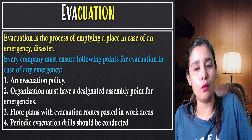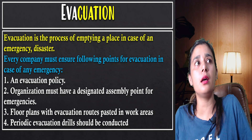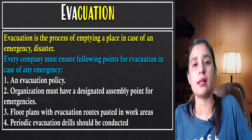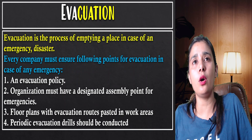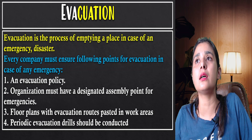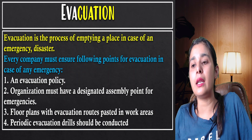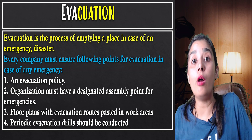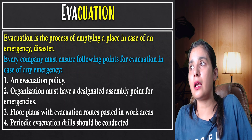An evacuation policy has to be followed by companies. Organizations must have designated assembly points for emergencies — employees need to know where to assemble if there is a disaster. Training must be given, especially in large organizations. Floor plans with evacuation routes should be pasted in work areas, showing clearly where the exit routes are.